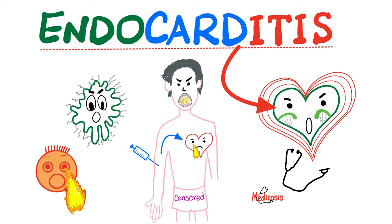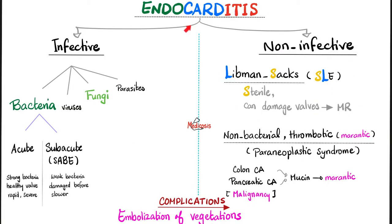Next, let's review infective endocarditis: inflammation of the endocardium and the valves. Endocarditis could be infective or non-infective. Today we're talking about infective endocarditis — it could be caused by any infective agent. More commonly bacteria, followed by fungi. Viruses and parasites are very rare.